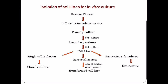Successive subculture ultimately ends in senescence — the aging of the cell — and ultimately the cell will die. However, if the cell line becomes transformed in any way, successive subculture will not lead to senescence. Immortalization can also lead to the production of immortalized cell lines, which will grow and divide continuously. That is how you can isolate a cell line from in vitro culture. You can ultimately get a clonal cell line, an immortalized or transformed cell line, or the cell will undergo senescence — it depends on what type of cell line you ultimately require.